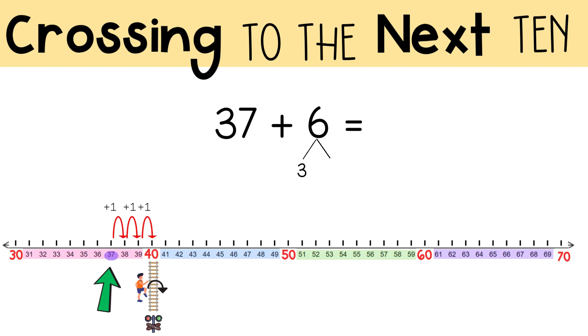How many more do we need to add? We need to add 3 more. And now we're at 43. We crossed a ten and solved 37 plus 6 to get 43.